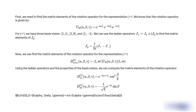D^1_{11}(alpha, beta, gamma) equal to E^(-i(alpha+gamma)) cos^2(beta/2). D^1_{10}(alpha, beta, gamma) equal to (-1/sqrt(2)) E^(-i alpha) sin(beta). D^1_{1,-1}(alpha, beta, gamma) equal to E^(-i(alpha-gamma)) cos^2(beta/2).